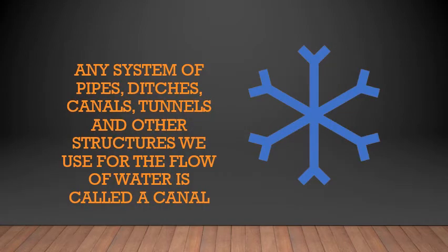Any system of pipes, ditches, canals, tunnels, and other structures used for the flow of water is called a canal. It can be made of concrete, or there are huge pipes used to transport water from different water bodies to cities. These canals may be open or through closed pipes. Some aqueducts are also underground.